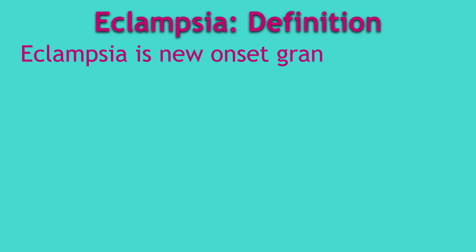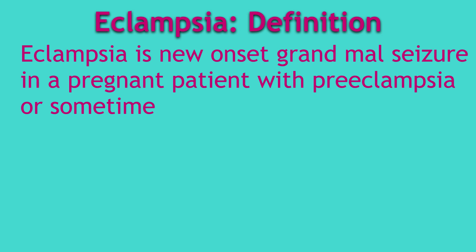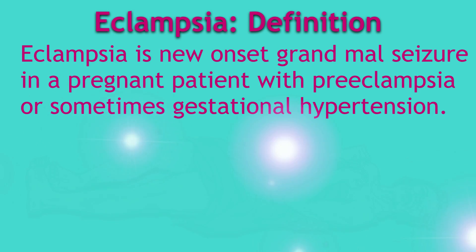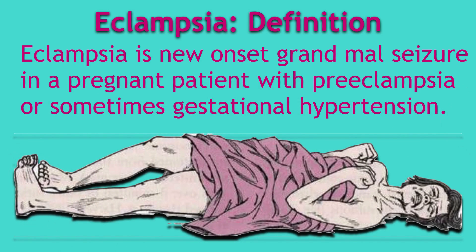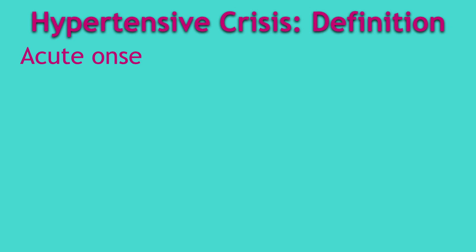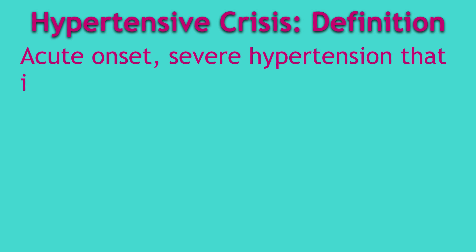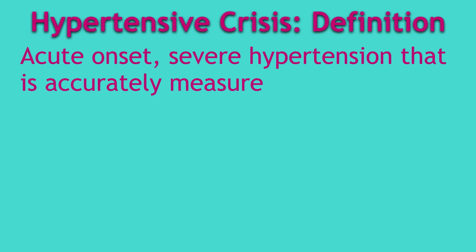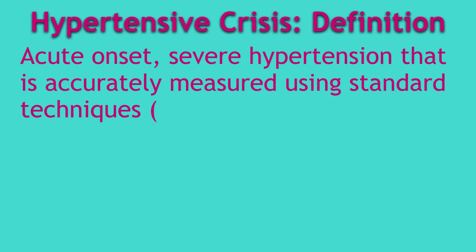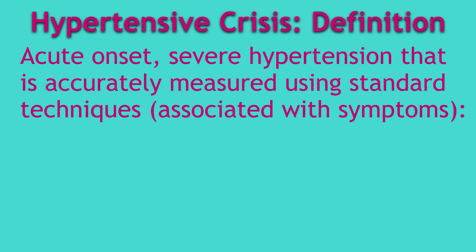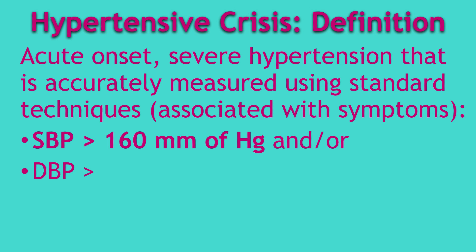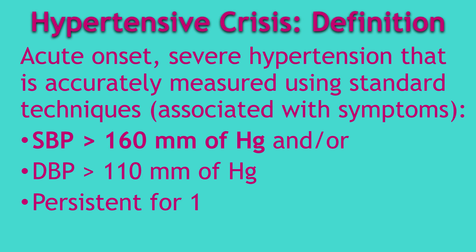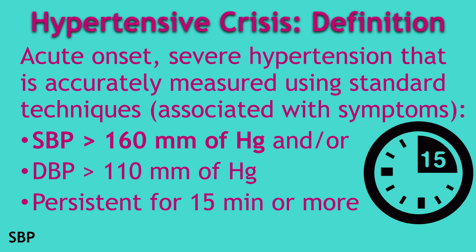How does one define eclampsia? Eclampsia is a new onset of one or more typical symmetrical grand mal seizures in a pregnant patient with preeclampsia or sometimes gestational hypertension. Hypertensive crisis is defined as acute onset severe hypertension, accurately measured using standard techniques and associated with symptoms — specifically systolic blood pressure greater than 160 mmHg and/or diastolic blood pressure greater than or equal to 110 mmHg.